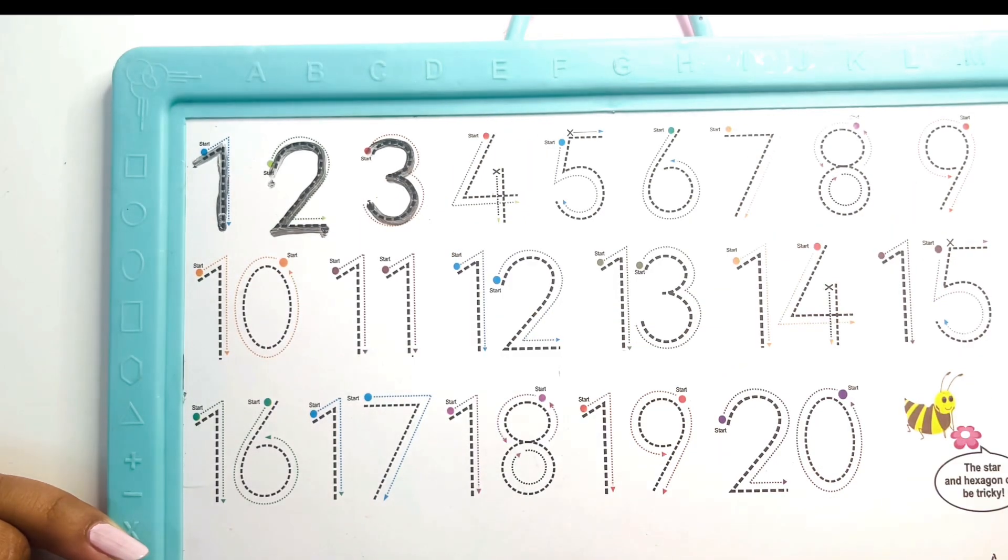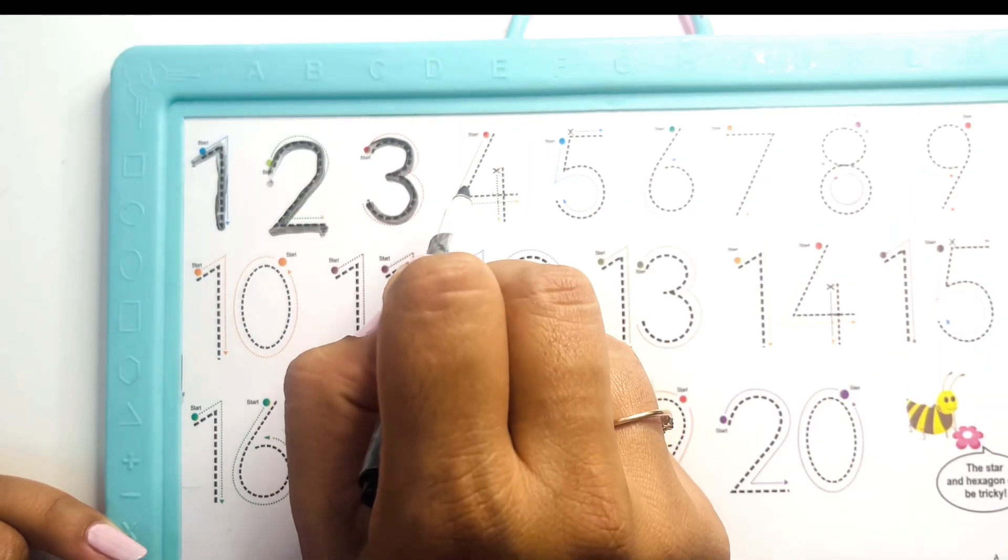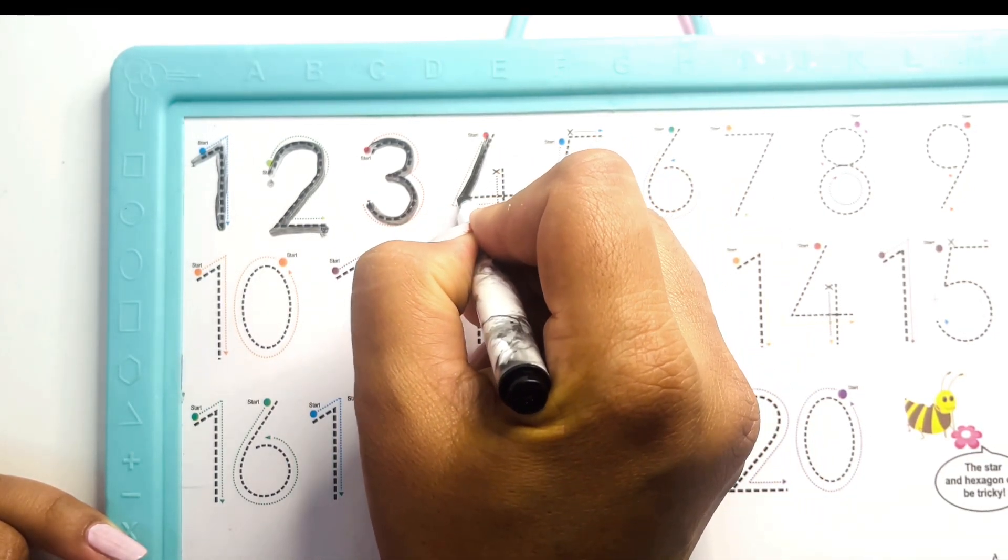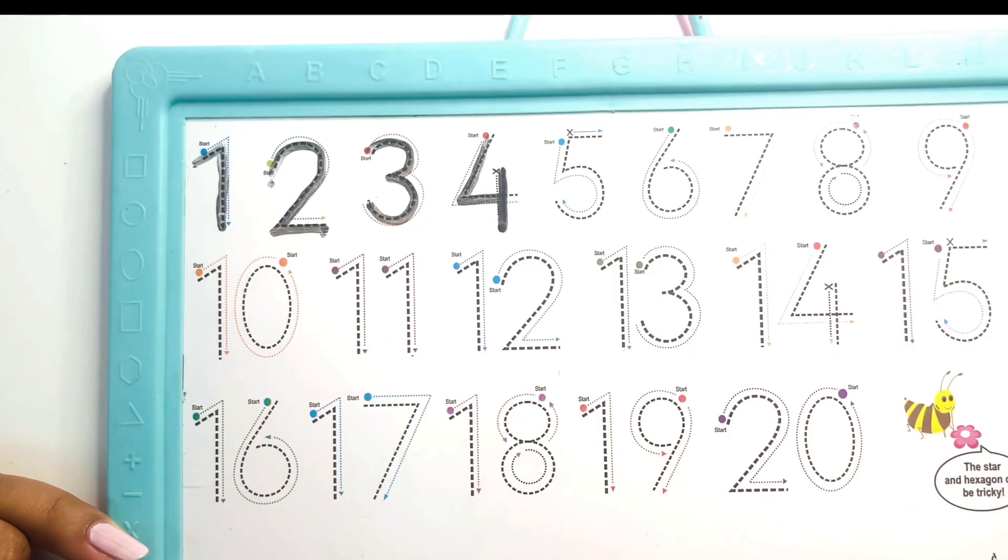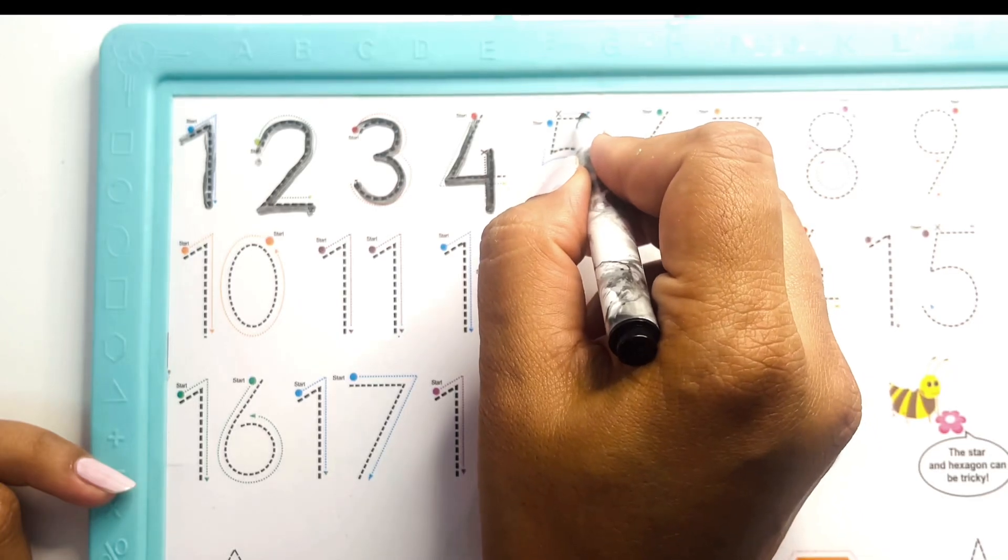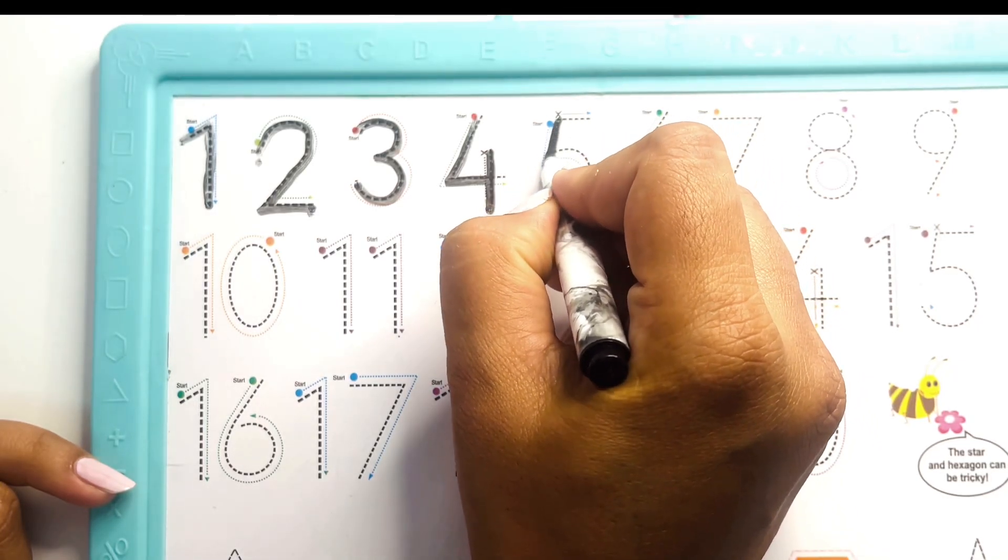And for four, start from here. See, it's easy. Number four. Now number five, start from here and do this. Number five. You are doing good.